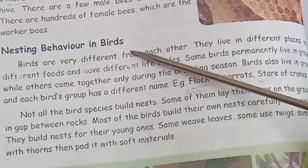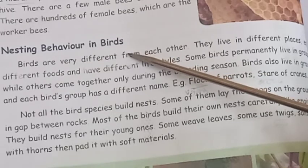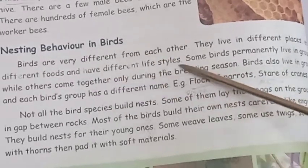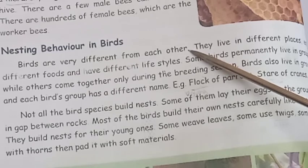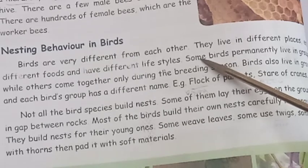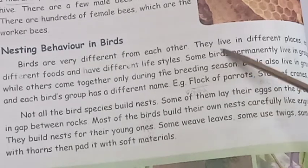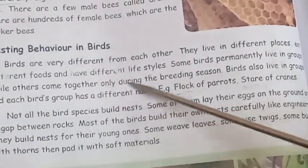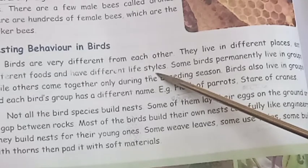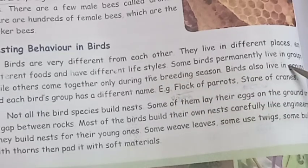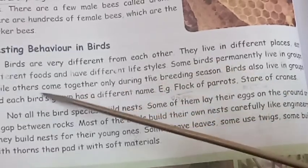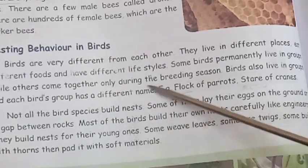Birds are very different from each other. Some birds live in different places, eat different foods, and have different lifestyles. Some birds permanently live in groups, while others come together only during the breeding season.